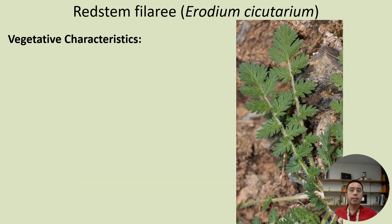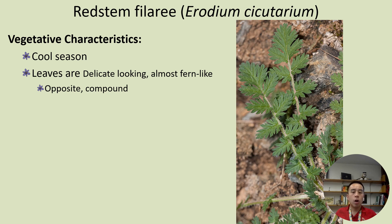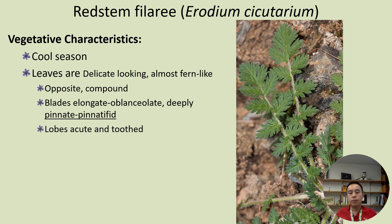Vegetatively speaking, red stem filaree, or Erodium cicutarium, is a cool-season plant, and the leaves are often delicate-looking and almost fern-like. They are opposite — occurring at the basal area completely opposite from each other and not offset. The leaves are compound, consisting of many smaller leaflets arranged pinnately, and they are often deeply pinnate and bipinnate, meaning those interior leaves are also pinnated.